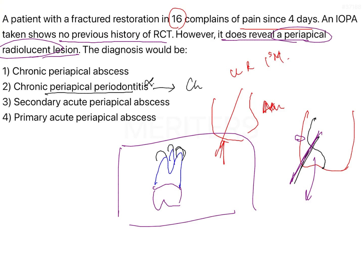Chronic periapical abscess can also be ruled out, because it would have developed over a period of weeks to months. Since the patient has had pain for only four days, and a chronic abscess would present with constant lingering pain or no pain at all, this option does not fit.